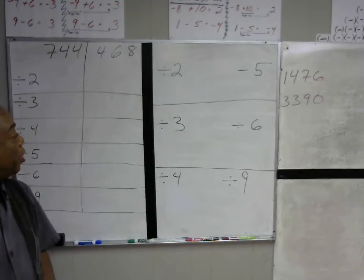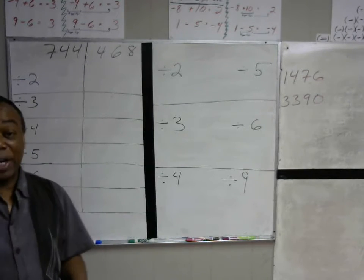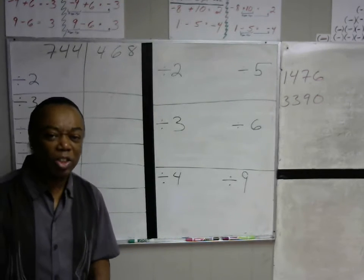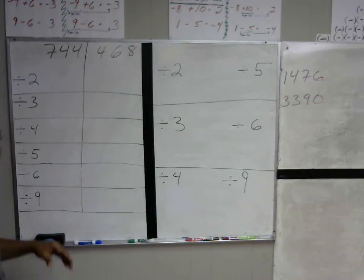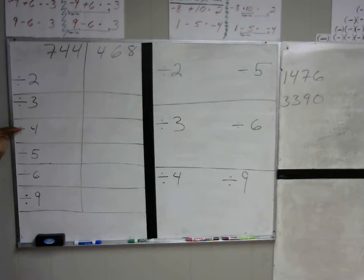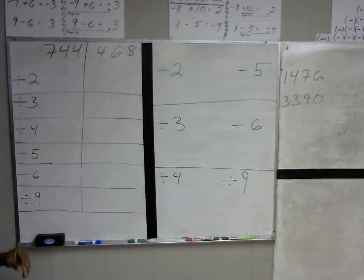We're going to find divisibility by certain numbers — just six numbers: divisibility by 2, 3, 4, 5, 6, and 9.